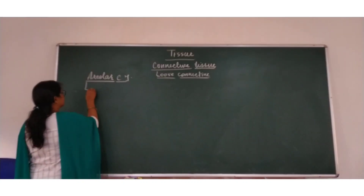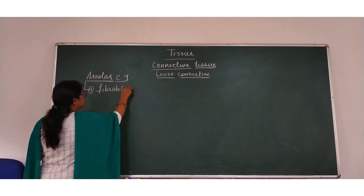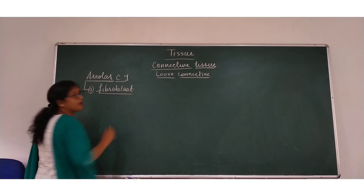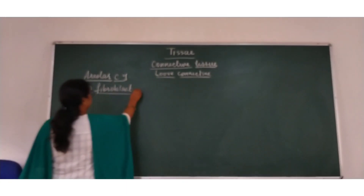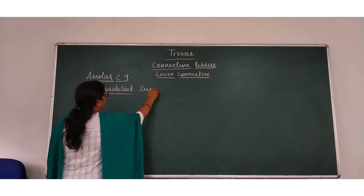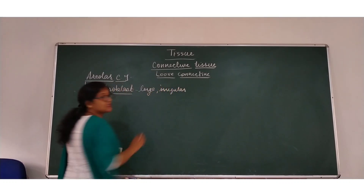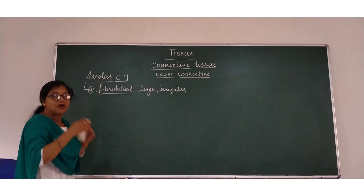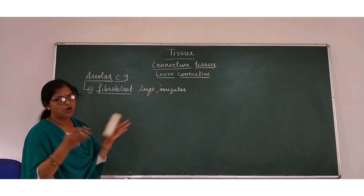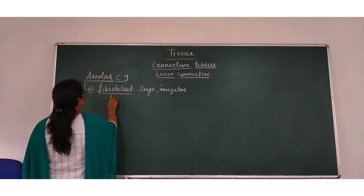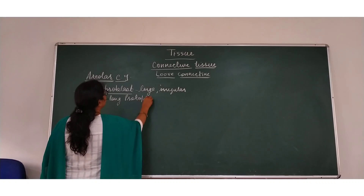The first cell type is known as fibroblast. This fibroblast is large and irregular, and it has long protoplasm processes.